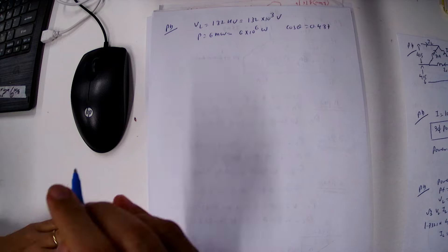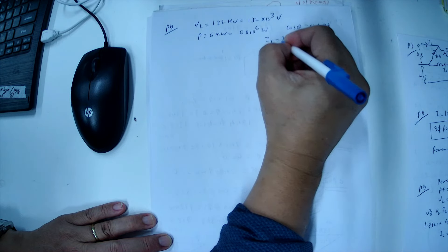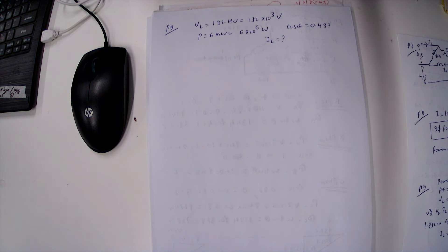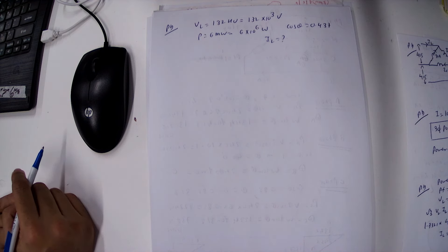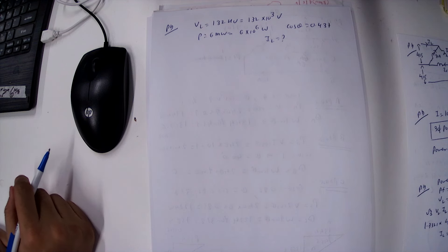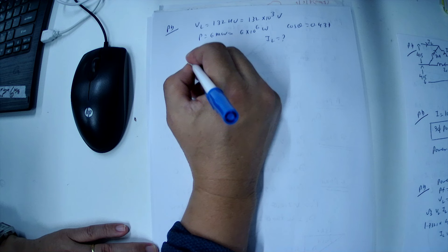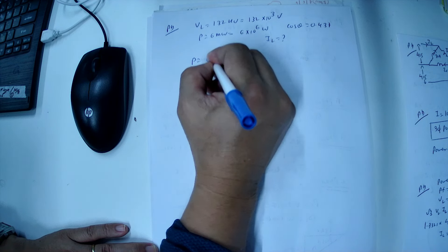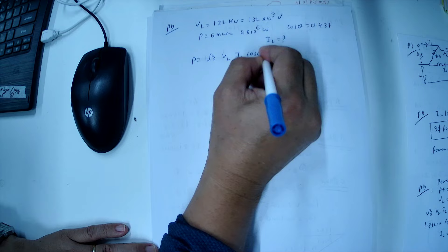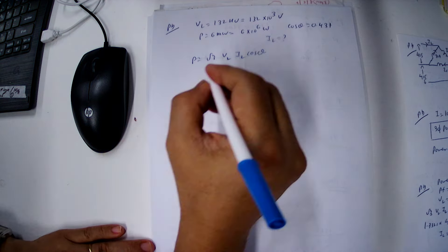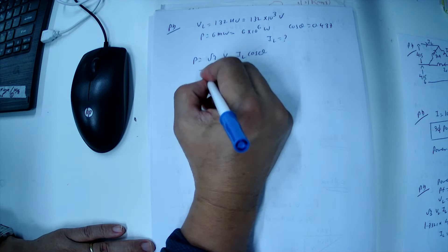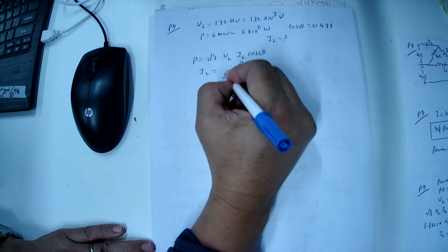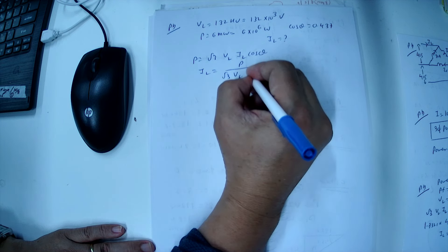We have to calculate current taken by the load. So this is for a three-phase system. We write down the three-phase power equation: P equals root 3 VL IL cos theta. Now we can find the current IL.